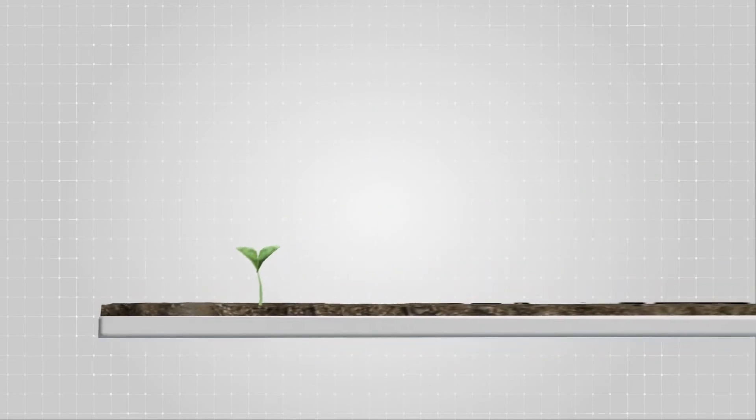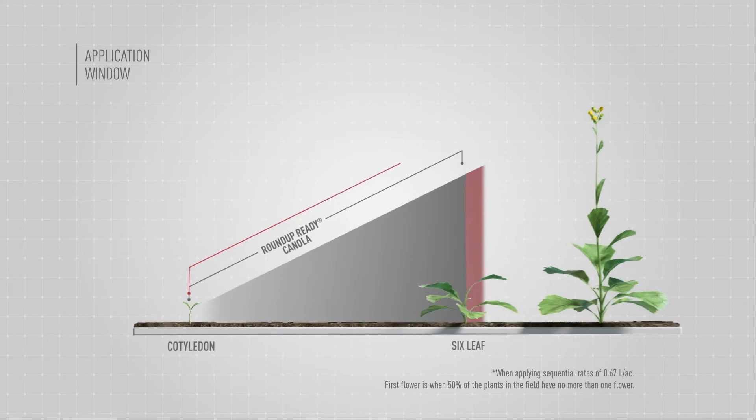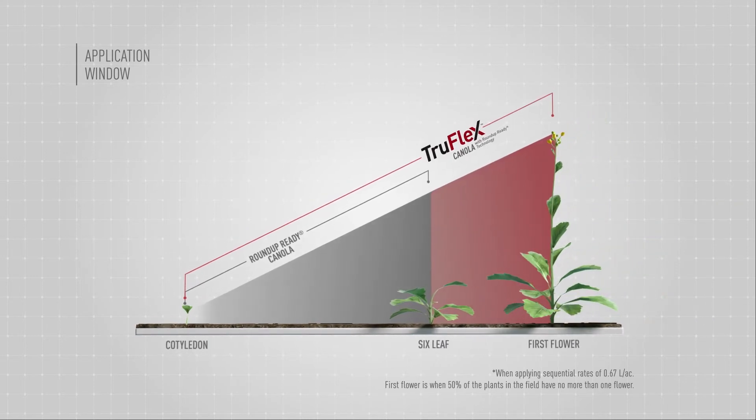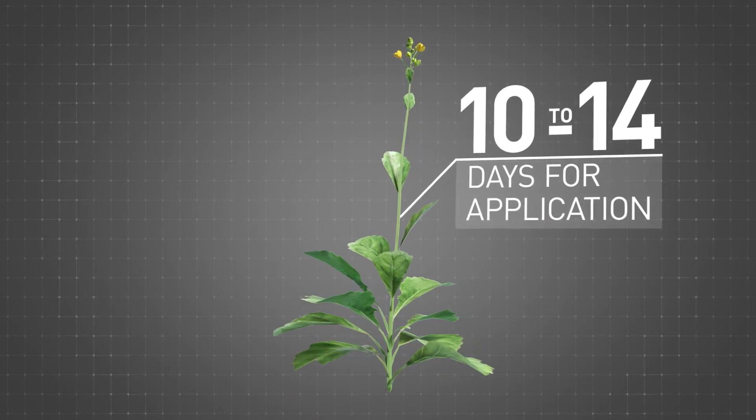TruFlex Canola with Roundup Ready technology also widens the application window, stretching beyond the six-leaf stage and all the way up to first flower. That's up to 10 to 14 days longer than our current technology.